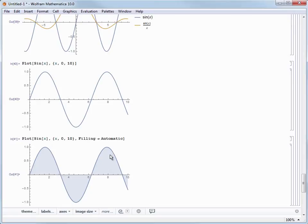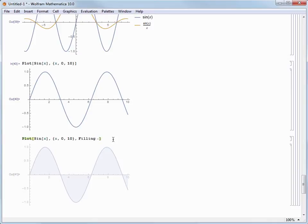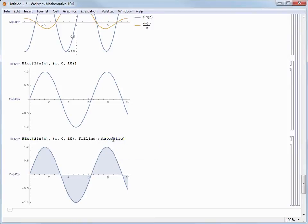You might be wondering how to make that right arrow, so let's delete Automatic and that right arrow, and then just type a hyphen, followed by a greater than symbol, and then type the word Automatic. You'll notice that as we do this, Mathematica formats the hyphen and greater than symbol into that nice arrow.